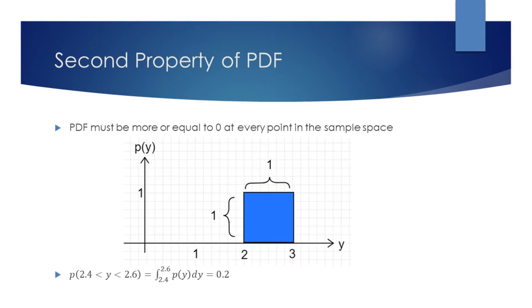The second property is that at any point PDF must be more or equal to 0. Unlike in the case of discrete variables, PDF does not have to be less than or equal to 1. We will now examine why.